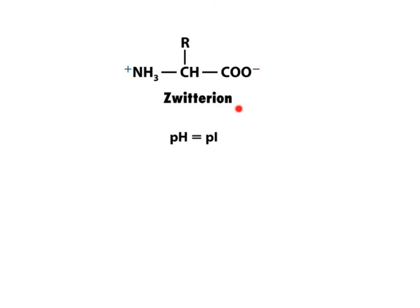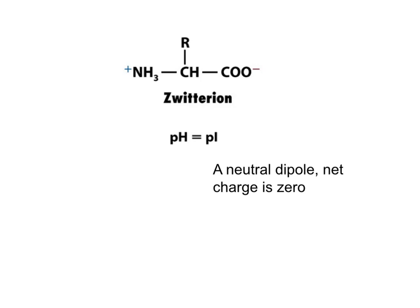A zwitterion can be defined as a dipolar ion because it has a negative charge and a positive charge with a net charge of zero. The word zwitterion means hybrid. Because amino acids are zwitterions, they are crystals that can form salts.